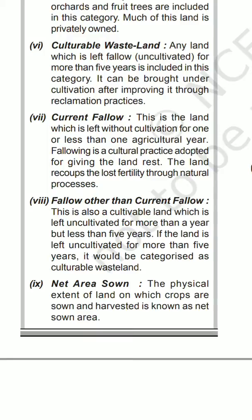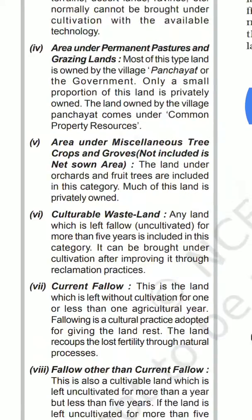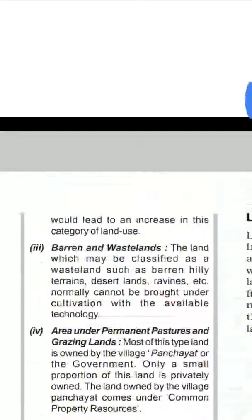Next is the net sown area — the area in which agriculture is done throughout the year. This is the actual area under cultivation.